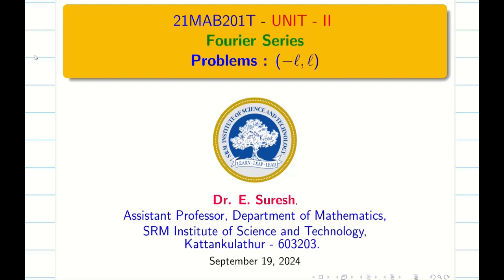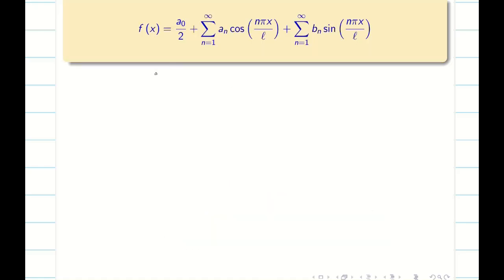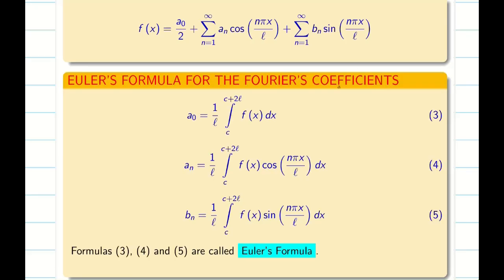Dear students, in this session we are going to deal with problems under the limit minus L comma L for the full range Fourier series. We just recall the Fourier series formula in general in the interval c comma c plus 2L. Now our concern is minus L comma L.